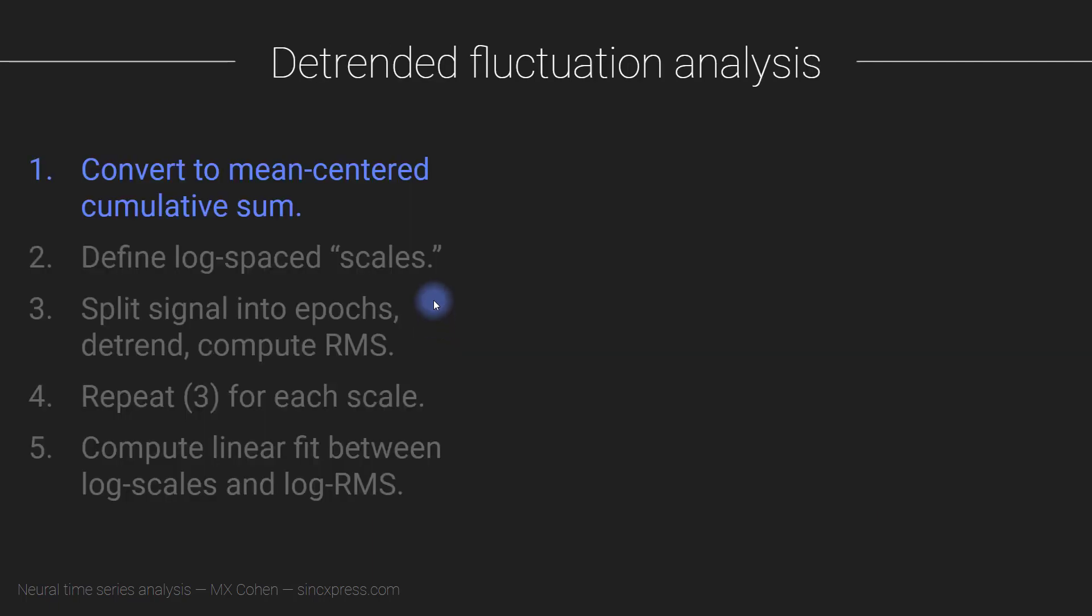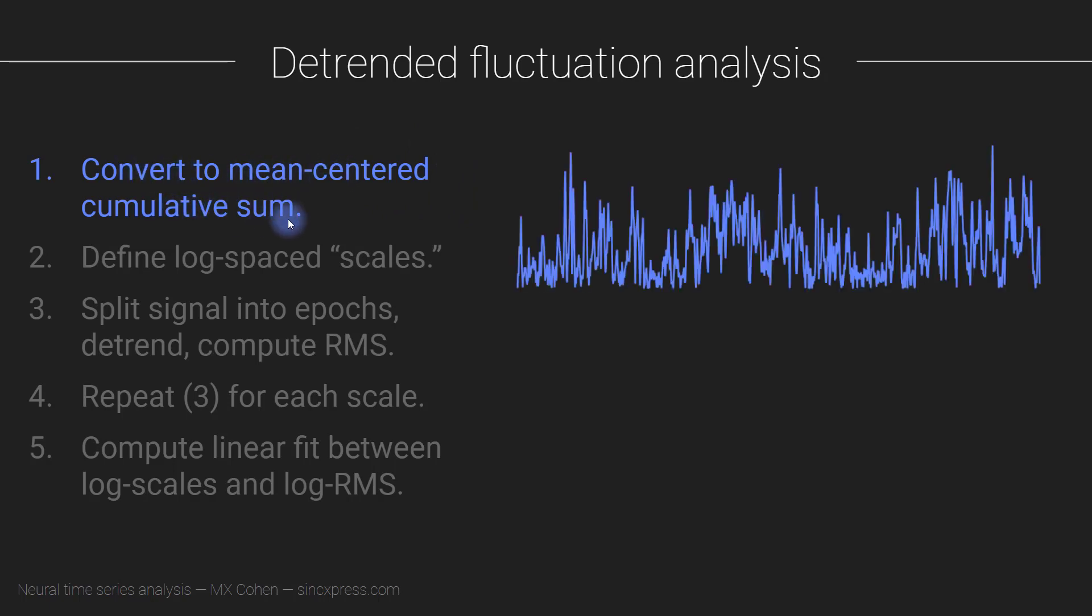And that is the idea of detrended fluctuation analysis. There's a couple of steps to computing the DFA, and I'm going to walk you through them. So you start with your signal, and then step 1 is to convert that signal into a mean-centered cumulative sum. Your signal might start off looking something like this, and then you start by mean-centering the signal. You just subtract the mean.